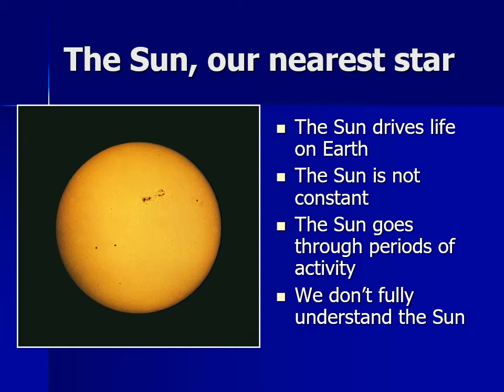One thing that was discovered when Skylab was in orbit around the Earth was that the sun is actually not constant in light output and energy output. The sun does get slightly brighter and dimmer over time. We also know the sun goes through periods of activity — more activity during some times, less during others. This range of activity we call the solar cycle. It turns out there's more than one solar cycle: one about every 11 years, one about 22 years, one about a century, and there may be one that's hundreds of years. Understanding the sun becomes very, very important to understanding life on Earth.